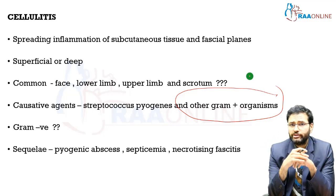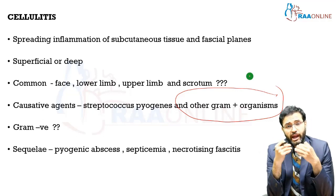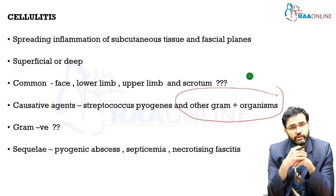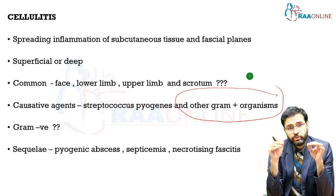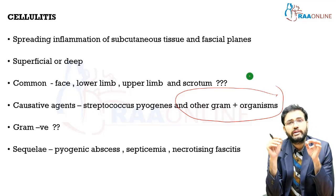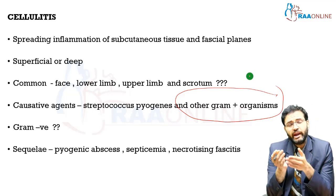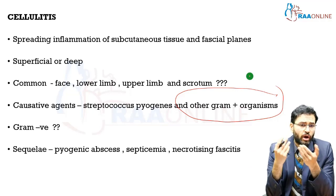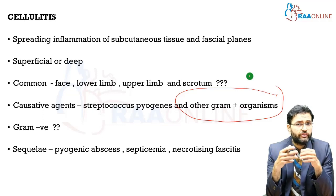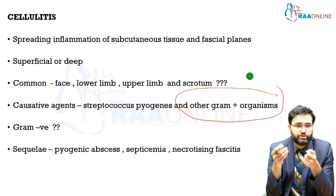While gram-negative organisms can cause cellulitis, it is comparatively rare. Gram-negative organisms capable of causing cellulitis include Klebsiella, E. coli, and Proteus. As a dictum, the most common causative organisms are gram-positive, with Streptococcus pyogenes being the most common. Cellulitis can proceed towards complete resolution with antibiotics, or it can develop complications such as formation of a pyogenic abscess, septicemia, or necrotizing fasciitis.